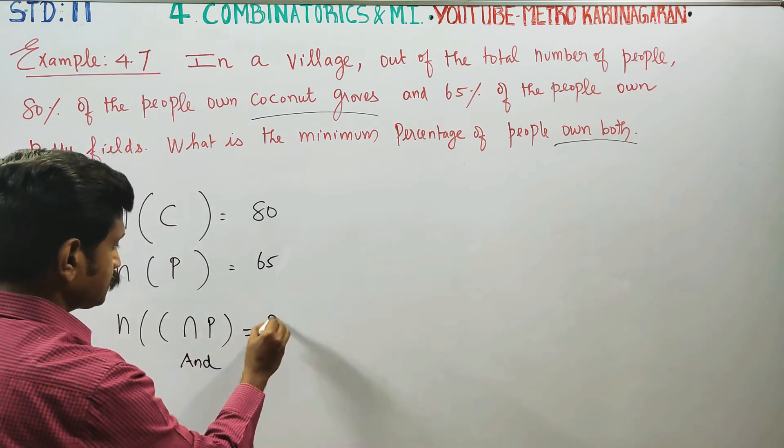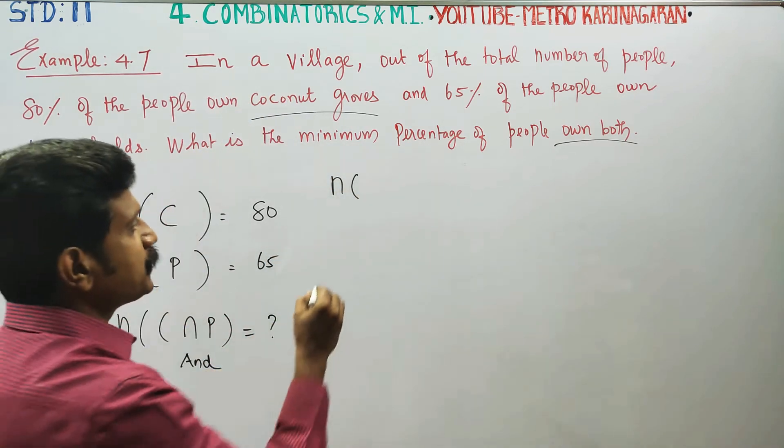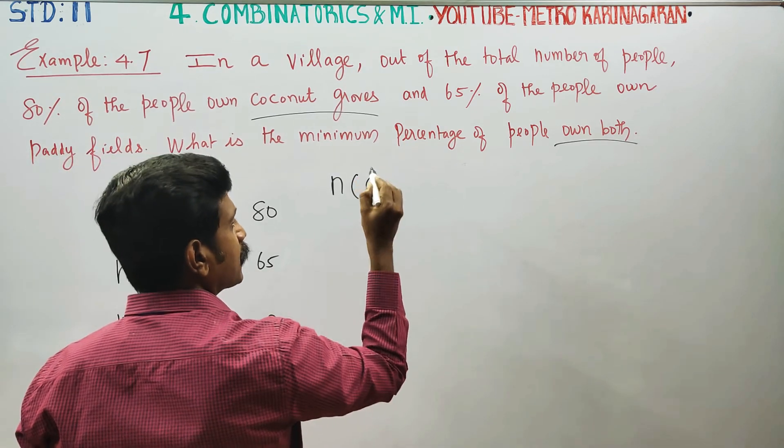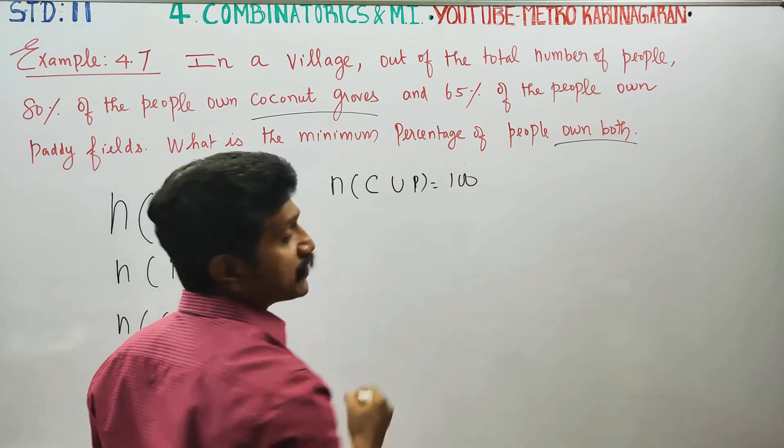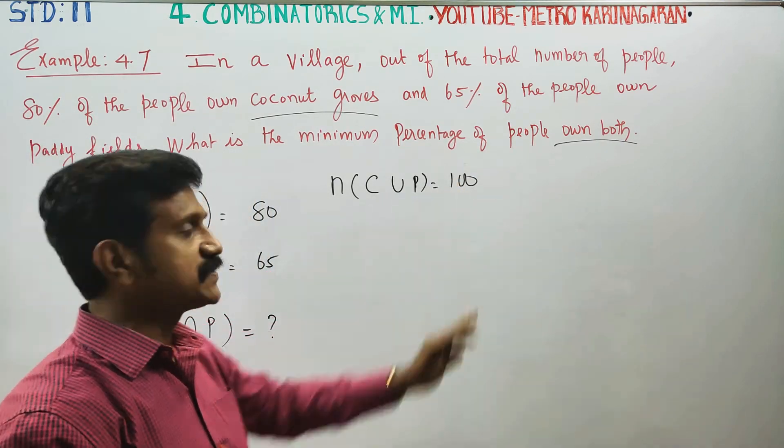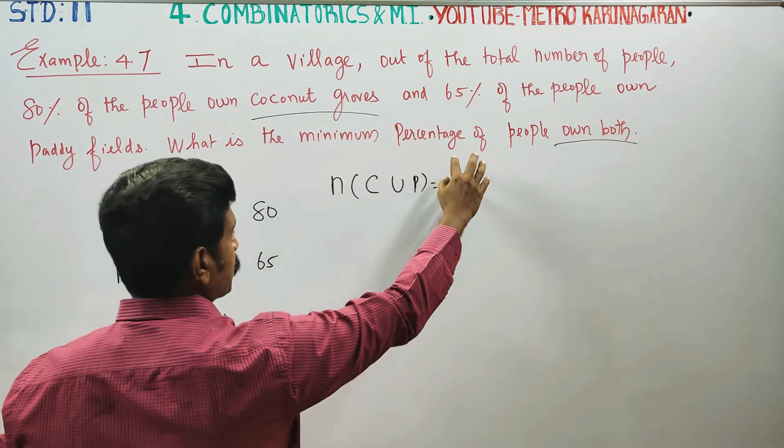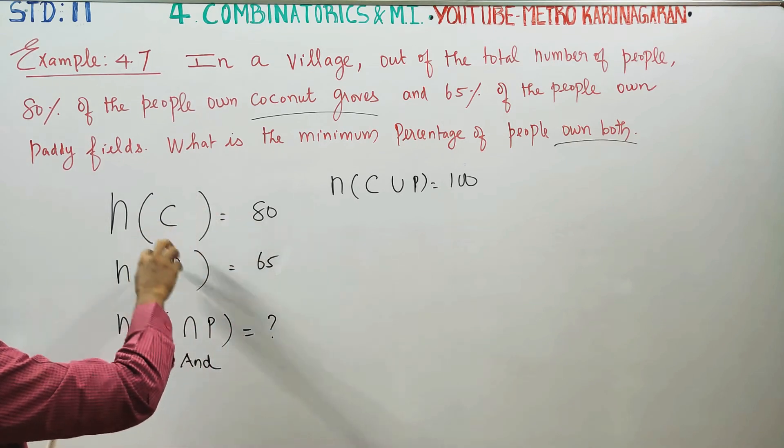This is the question. Actually, this is the percentage sum. Percentage sum is the coconut union paddy. 100% is the number of people. Then we have 100% people, 80% coconut, 65% paddy.